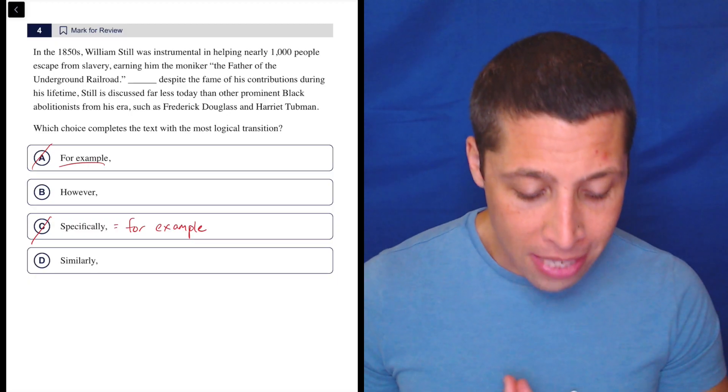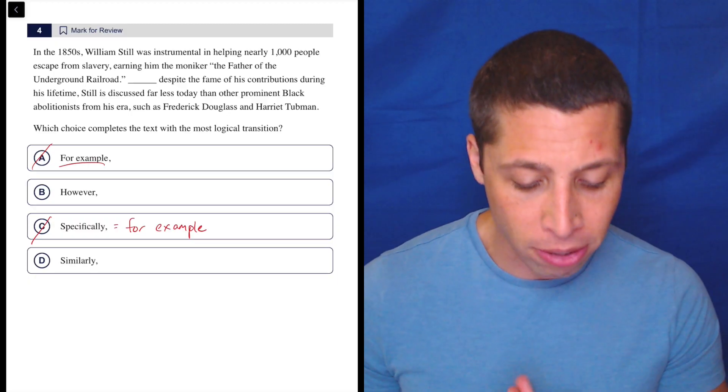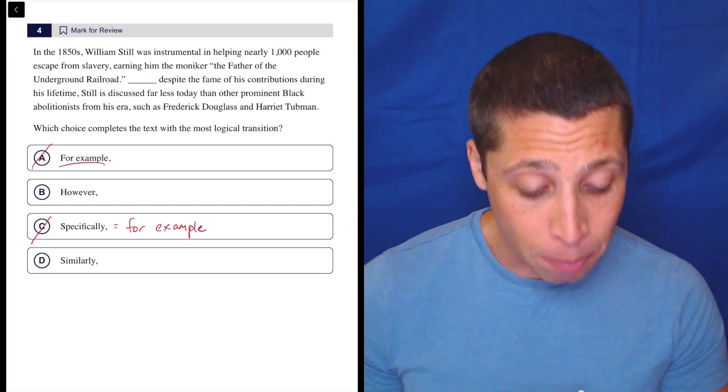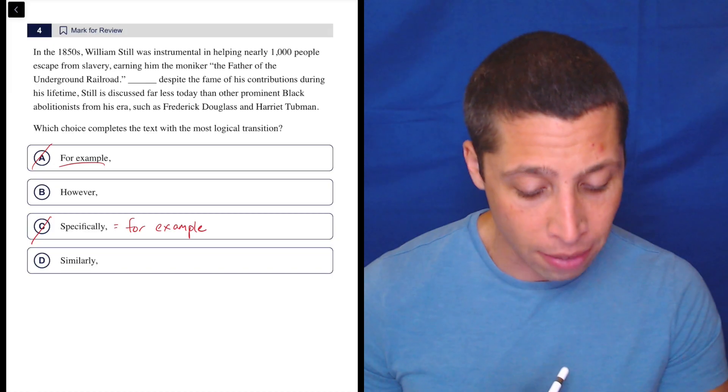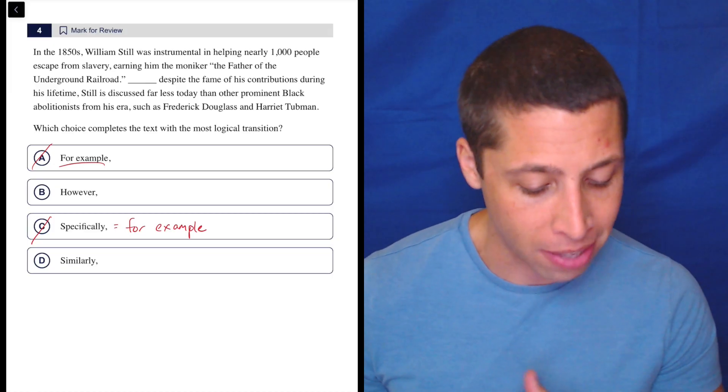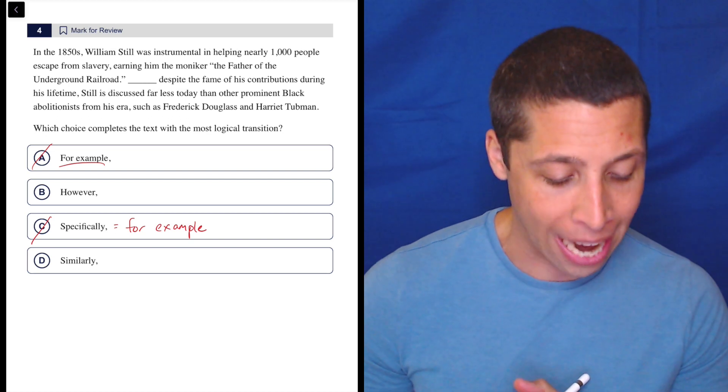In the 1850s, William Still was instrumental in helping nearly a thousand people escape from slavery, earning him the moniker, the father of the underground railroad. Despite the fame of his contributions during his lifetime, Still is discussed far less today than other prominent Black abolitionists from his era, such as Frederick Douglass and Harriet Tubman.